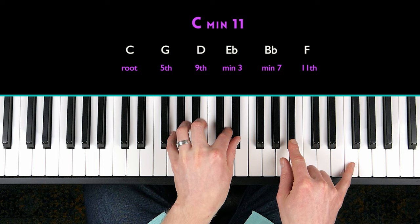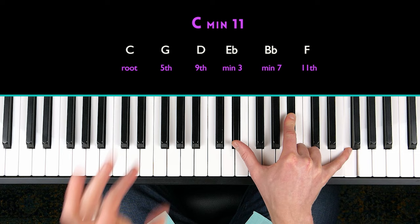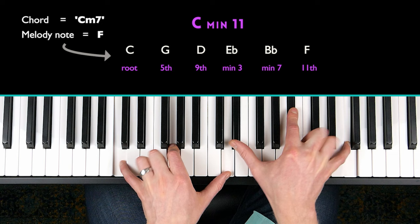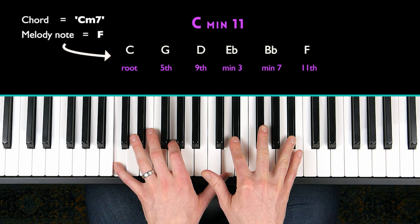So this is a great voicing for minor 11 chords. If I see C minor seven in the chord sheet and the melody note is the 11th, which is an F, same note as the 4th, then this is my trigger to play this voicing. Because when I play this voicing, I play the chord, all the chordal tones, and I play the melody note as my top note.